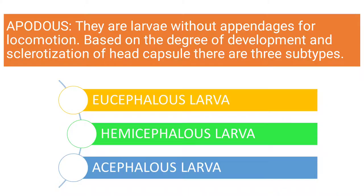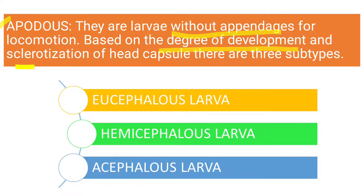Let us start with the apodus larvae. As the name suggests, 'a' means without, and 'podus' means appendages. So in this type of larvae there are no appendages for locomotion. The classification within apodus larvae is on the basis of degree of development and sclerotization of the head capsule.